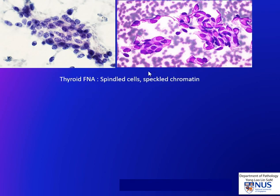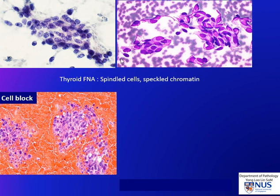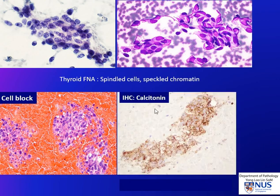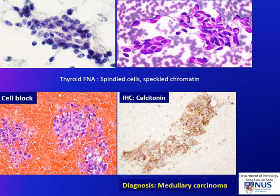Here is an example of a thyroid FNA. This is the Papanicolaou stain smear, and this is the haemocolor stained air-dried smear. The morphology is suggestive of medullary carcinoma, but we cannot make a definitive diagnosis without confirmation using immunohistochemistry. So a cell block was performed. This is the H&E stained section from the cell block, and this is the definitive stain — calcitonin — which is positive. Therefore we can make a definitive diagnosis of medullary carcinoma. Without the cell block and calcitonin immunohistochemistry, we would probably only call it suspicious for malignancy.